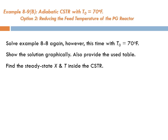Solve Example 8.8 again, but this time with T0 equals 70 degrees Fahrenheit. Show the solution graphically, also provide the used table, and find the steady-state conversion and temperature inside the CSTR.